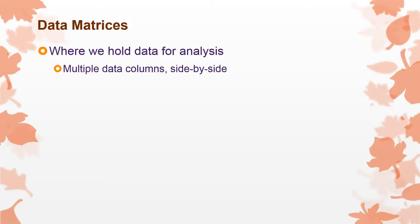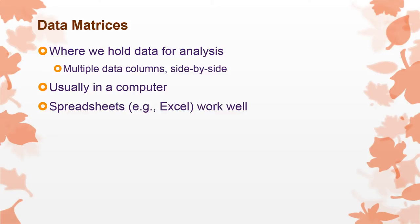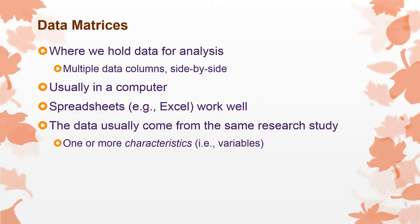Now let's talk about data matrices. This is where we hold data for analysis. Usually there are multiple data columns that are placed side by side, usually in a computer. In fact, spreadsheets are awesome for that. And the data usually come from the same study. If you're going to put a bunch of data in a data matrix, you don't want to put one variable that you collected from 25 people on one side of town and another variable that's collected from some birds you observed in your backyard. You usually want one group of individuals and you measured multiple characteristics. So you have multiple individuals or cases and each of them was measured on the same characteristics, the same variables.